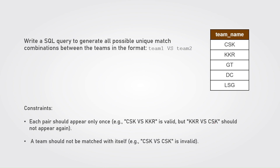The second constraint is that a team should not be matched with itself. For example, CSK versus CSK is invalid. So we have to generate unique match combinations where a team cannot play against itself. The output should be in the format team one versus team two.